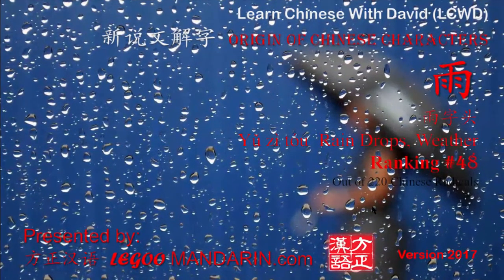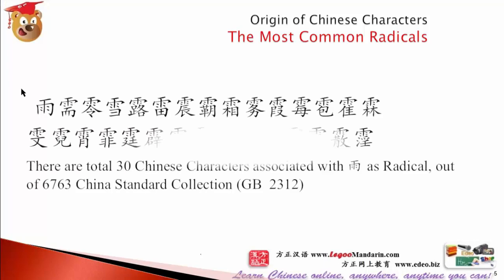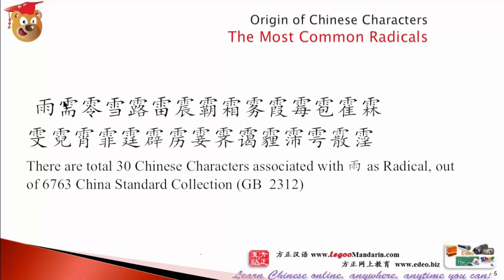雨 is also used as a radical — 雨字头 — meaning something related to raindrops or weather. When used as a radical, it mostly appears on the top. You write it, but change it a little bit, it becomes shorter. Like 雪, which means snow.